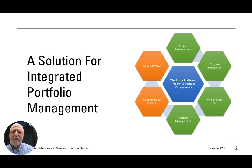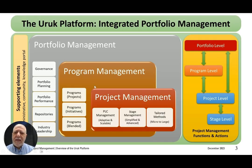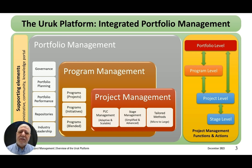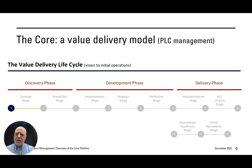These are the six elements of the platform that are active today. When we say active, that means they are at different levels of progress — some are well established, some we're still adding functionality to. Continuing, we can see the same picture in a slightly more detailed way. This is our view of what integrated portfolio management is: you have portfolio management including portfolio planning and performance, program management, and on the right all the PM functions and tools at different levels — for example, scope, cost, and schedule at the project, program, or even stage level.